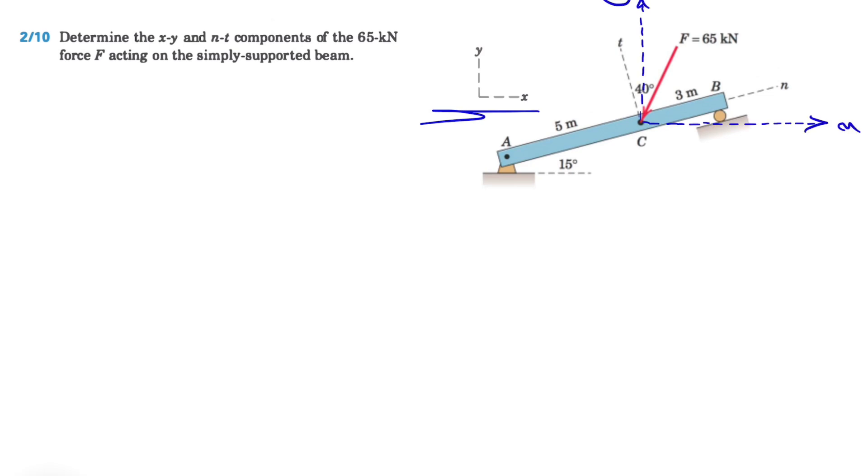Alright, so I showed our x and y axis in blue on the figure. We know that the beam is making 15 degrees with the horizontal, which means this angle right here is 15 degrees as well.